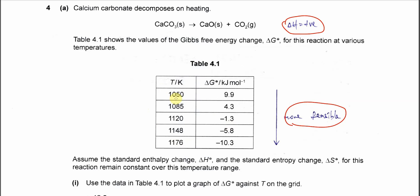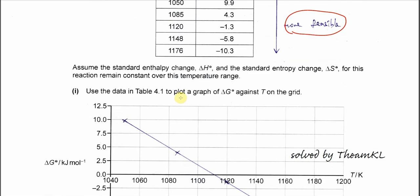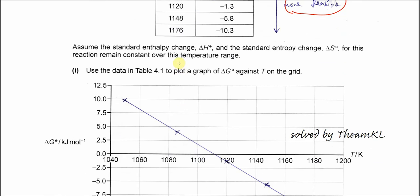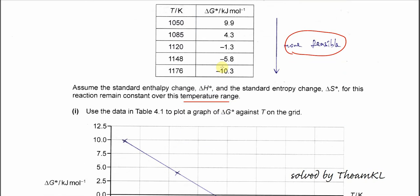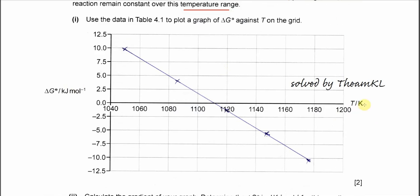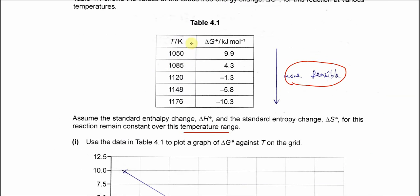This is a decomposition reaction, so when we increase the temperature it will be easier to happen — it's more feasible. Assuming enthalpy and entropy are constant over this temperature range, try to plot Gibbs energy versus temperature in Kelvin using all the values in the table.